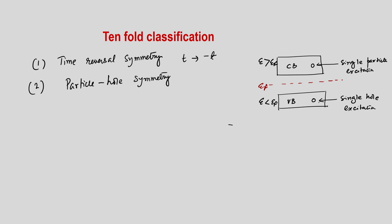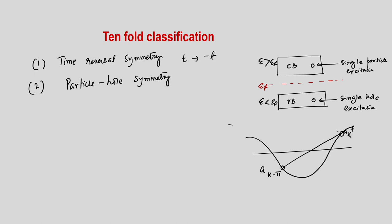Corresponding to an energy minus E for a hole excitation, there will be a particle excitation at energy plus E. In terms of a band picture, if we take a cosine band and fix the Fermi level somewhere, then the particle hole symmetry would correspond to: a state at k minus π corresponding to a particle, corresponding to a hole at that k. This is the hole and this is the particle.